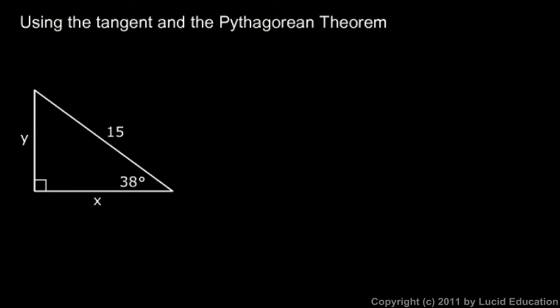Here's an example that involves using the tangent ratio and also the Pythagorean theorem. Remember, tangent is opposite over adjacent. So if we apply that concept to this triangle, here's an angle. The tangent of that angle has to be the length of the side opposite that angle divided by the length of the side adjacent to that angle.